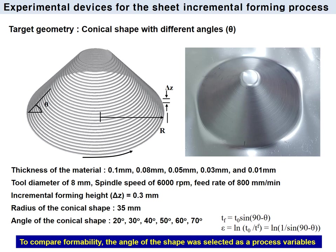The forming conditions were fixed; the impact of forming conditions was not included in this study. The impact of thickness was considered. The radius of the conical shape was 35 mm. The angle of the conical shape was the variable modified in this work. In the incremental forming process, the sine law was applied to predict the deformation amount of the material — the strain of the material is related to the angle of the slope. To compare formability, the angle of the shape was selected as a process variable.